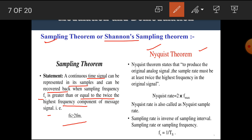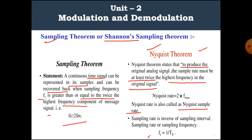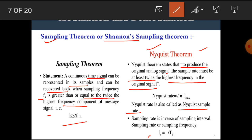The Nyquist theorem states that to reproduce the original analog signal, the sampling rate must be at least twice the highest frequency in the original signal. The Nyquist rate is equal to 2 × fmax, where fmax is the maximum frequency component. The Nyquist rate is also called the Nyquist sample rate. Sampling rate is the inverse of sampling interval: fs = 1/Ts. These two theorems are similar in nature.